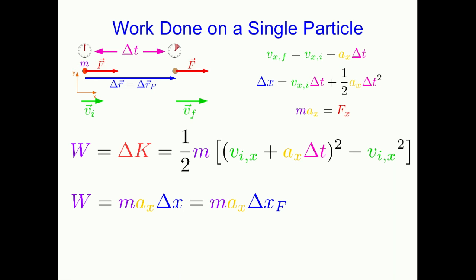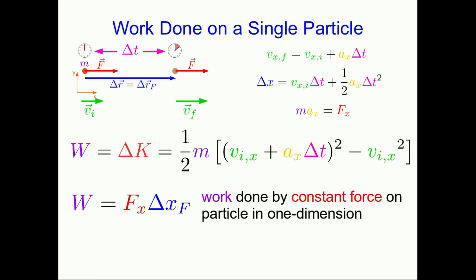Delta x is the same as the x-component of the force displacement. And with m·a_x out in front, we know that's just the x-component of the force. And here we have our useful form: this is the work done by a constant force on a particle in one dimension.